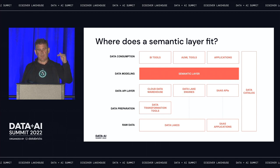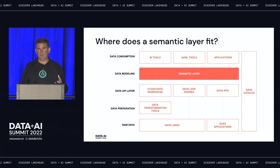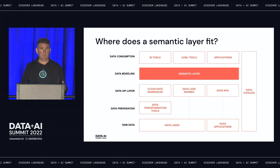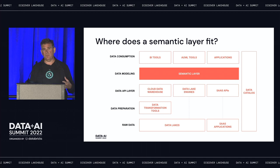People consume data with BI tools — those are the business users. But data scientists are also creating ML models and need access to data. They're not only reading data; they're also writing data, because with ML models they're creating new features, new attributes, new predictions — and those need to be written back to the semantic layer.